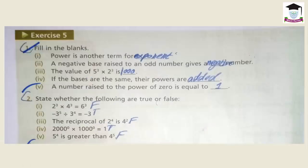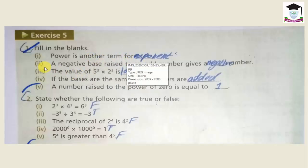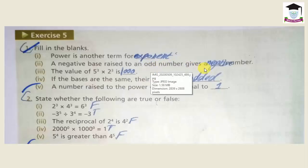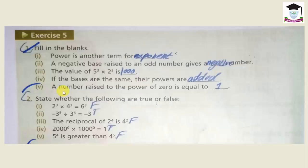Now Exercise number 5 starts. Question number 1 is fill in the blanks. First part: 'Power is another term for ___.' Power is another term for exponent. Second: 'A negative base raised to an odd number gives a ___ number.' If the base is negative and its power is an odd number, the result is a negative number.